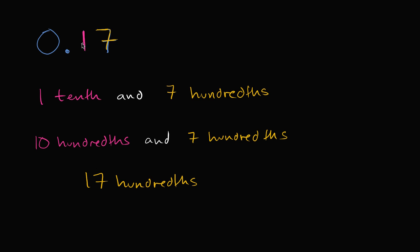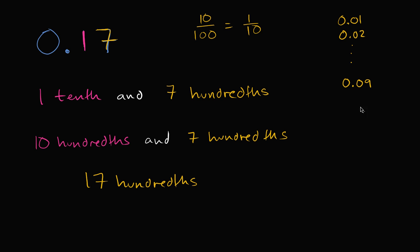To build intuition for why we can call this seventeen hundredths instead of one tenth and seven hundredths, let's count by hundredths: one hundredth, two hundredths... skipping ahead to nine hundredths. What would be the next one? Ten hundredths. Ten hundredths is the same thing as one tenth. So if we go from nine hundredths and count one more hundredth, the next one is ten hundredths.